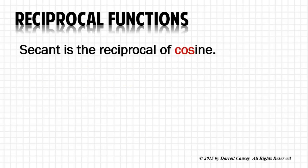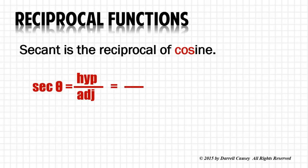Secant is the reciprocal of cosine, which is hypotenuse over adjacent. Flip it over and you get r over x.